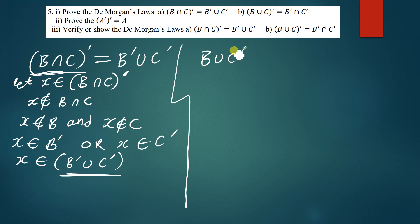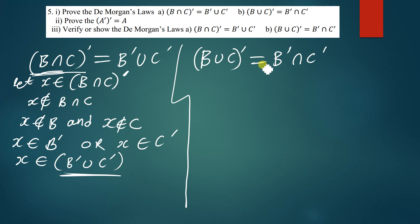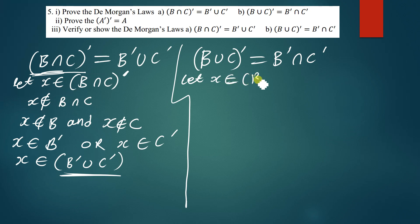The other law says (B∪C)ᶜ is equal to Bᶜ∩Cᶜ. So how do you prove this? The first thing is to introduce the arbitrary element. We say: let x be an arbitrary element. So we say let x be a member of (B∪C)ᶜ.